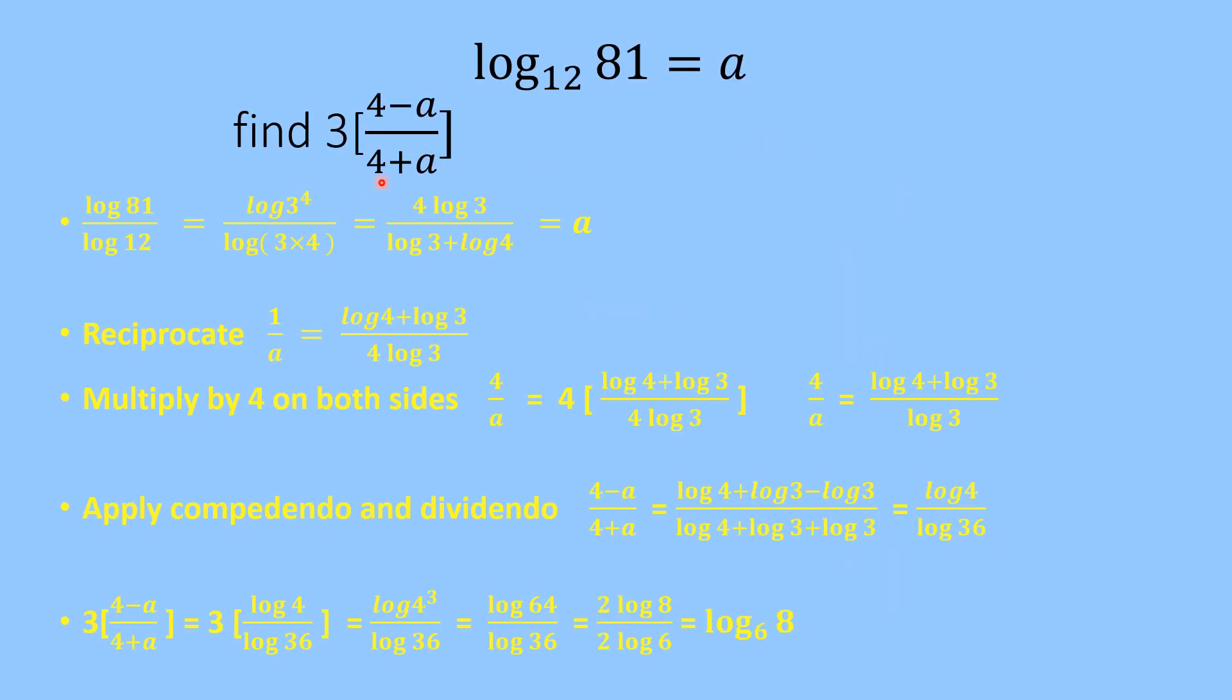First, the given statement can be written as log of 81 upon log of 12. We take the left hand side of the given equation. 81 can be transformed as 3 power 4, and 12 can be written as 3 multiply 4. So this becomes log of 3 power 4 upon log of 3 multiply 4.